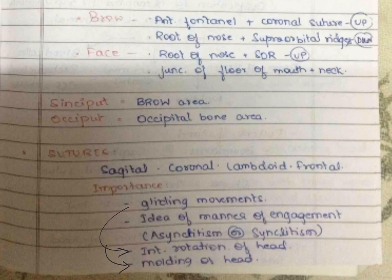By internal examination, if you can see the vault of the skull, it gives an idea of the manner of engagement of the head. By seeing the level of the occiput and the sinciput, you can predict the type of engagement, including whether there is synclitism or asynclitism.